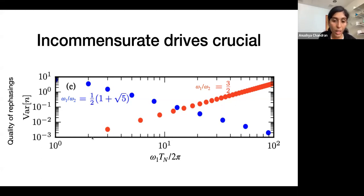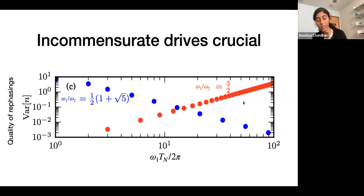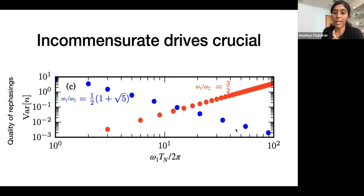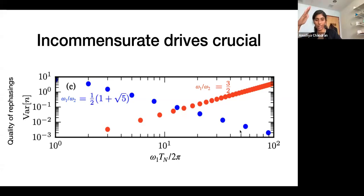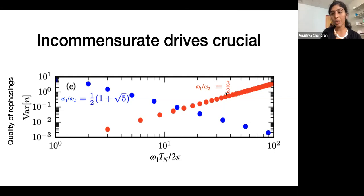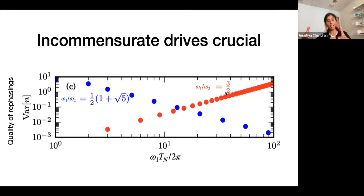The slope of this curve shows the width growing linearly in T_n, so the variance grows as T_n squared. Incommensuration is coming in because for incommensurate drives we are able to show that the anomalous velocity — perpendicular to the electric field — is the same irrespective of the state. Whereas when you have commensurate drives, that's not true. When you build a wave packet over time, the slightly different anomalous velocities for different states means the width just grows in time, so the quality of re-phasing gets worse.